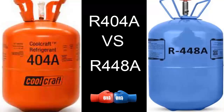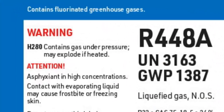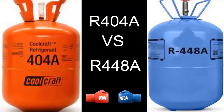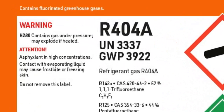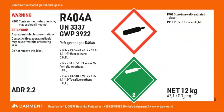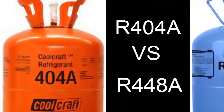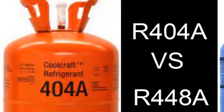R448A has a global warming potential (GWP) of 1,387, while R404A has a GWP of 3,920. It is precisely this high GWP value that condemns the use of R404A due to environmental restrictions.